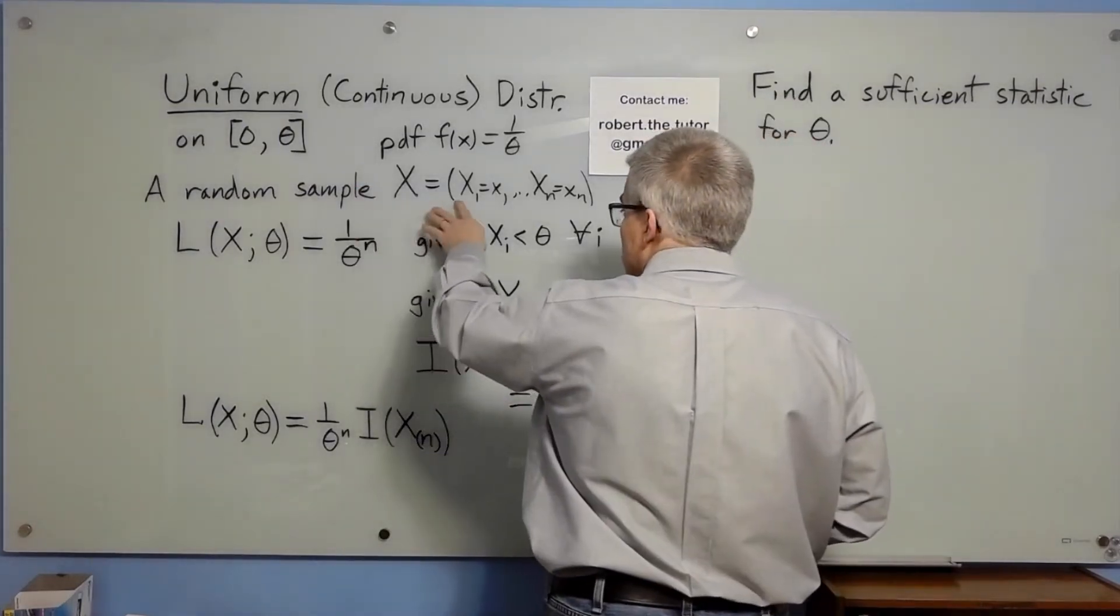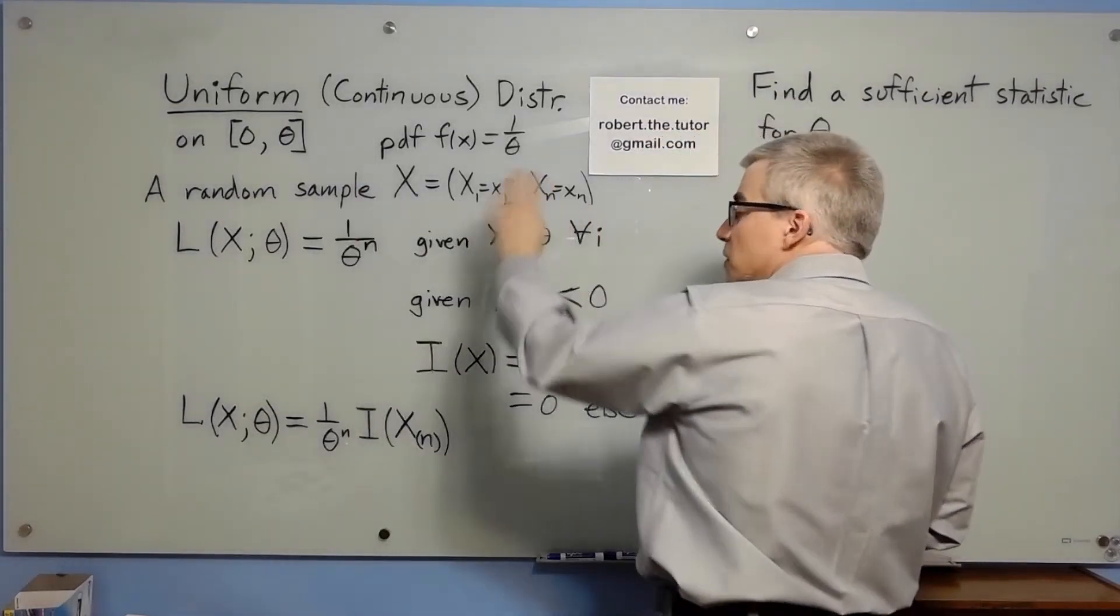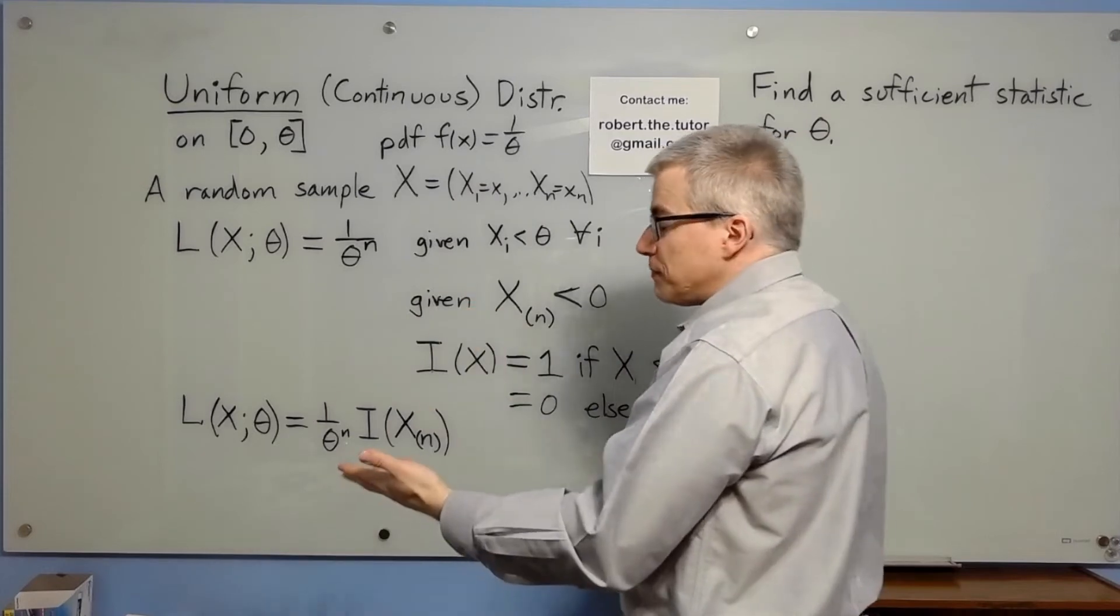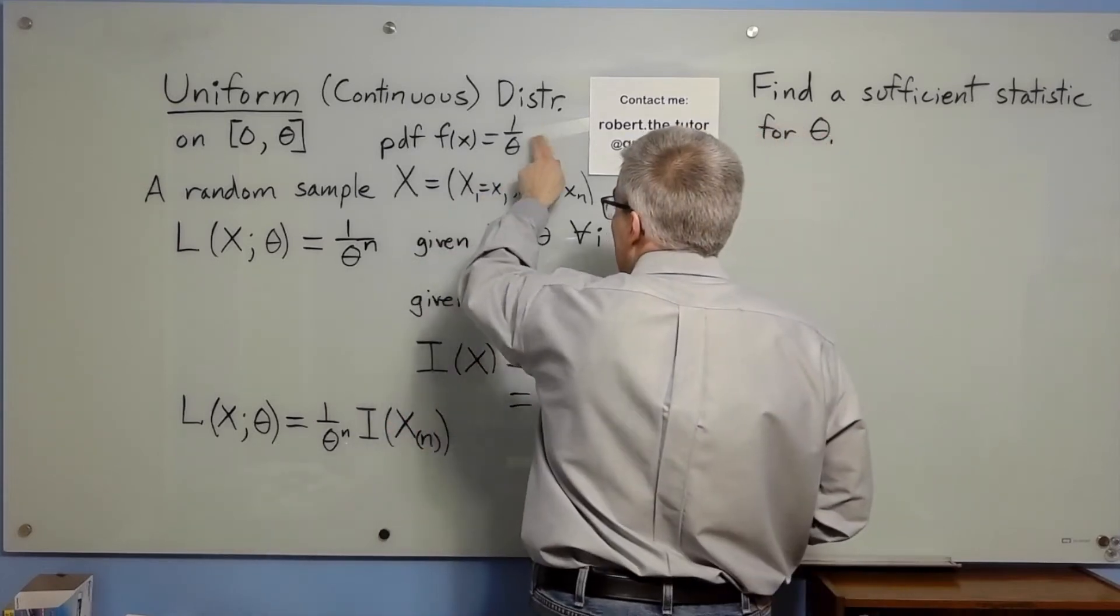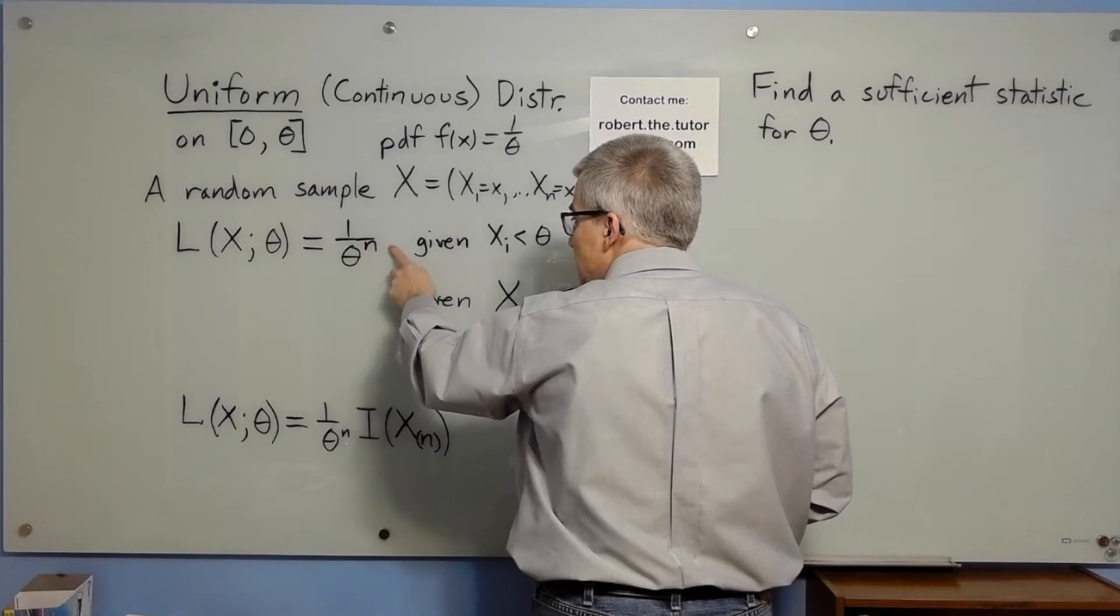A random sample x1 to xn, the likelihood of getting that data is each one just has a density of 1 over theta, so it's 1 over theta to the n.